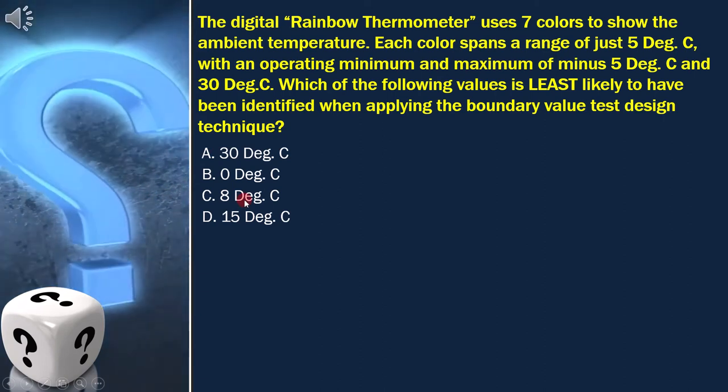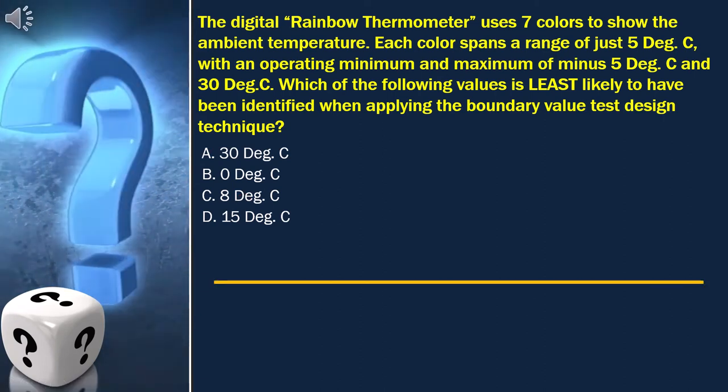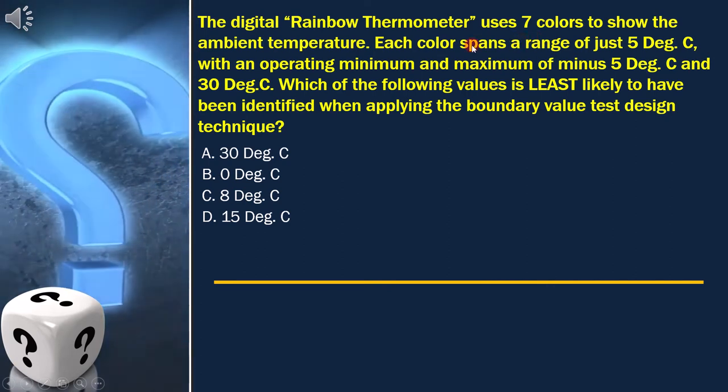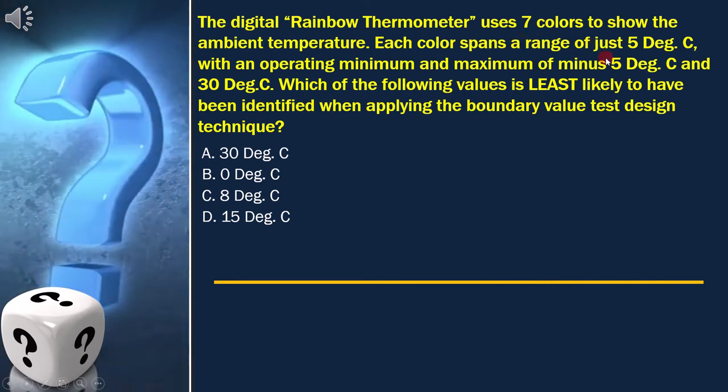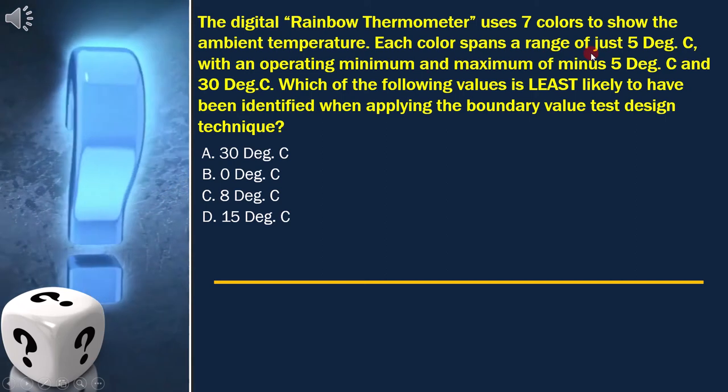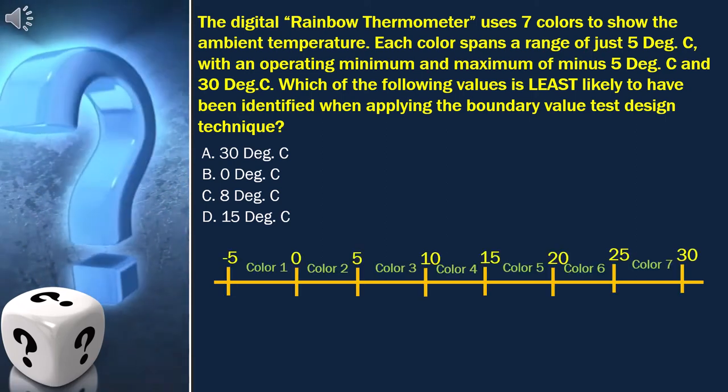Now let's draw the boundary value analysis diagram. As per the question, the minimum and maximum boundary is negative 5 degrees Celsius and 30 degrees Celsius.